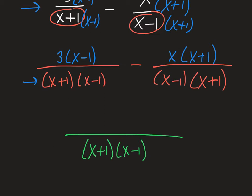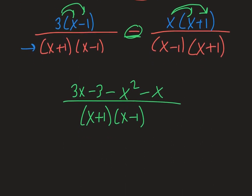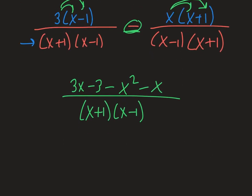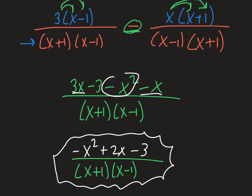Now let's simplify what we have. In the numerator I'm going to multiply this out so we can combine like terms: 3x minus 3. Then be careful — we do have a minus here, so we're minusing x squared and then minusing x, because that minus sign is still counting. Now it's just a matter of combining like terms for the final answer. The denominator stays as x plus 1 times x minus 1. In standard form: negative x squared, combine 3x minus x to get plus 2x, and then minus 3 sitting there. That's how we leave this — it looks a little messy, but it's a single fraction now. We combined two separate fractions into one.